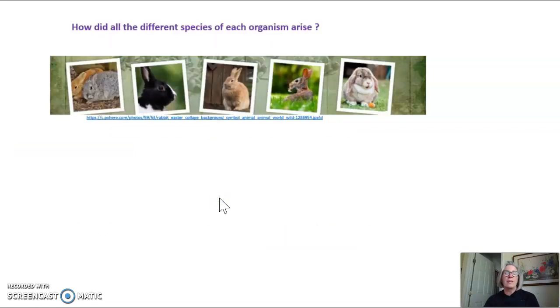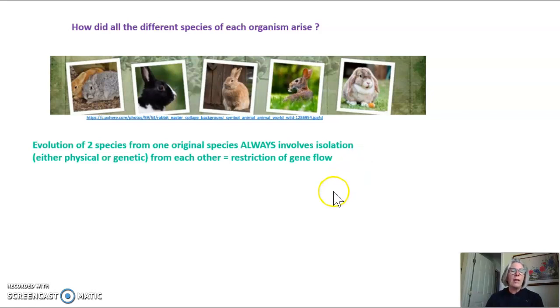Now, how did all these different species of organisms arise? If you look at all these different species here of rabbits, I love this one with the little floppy ears, how did all these different species of rabbits arise? Well, evolution of two species from one original species always involves isolation, either physical or genetic, from each other. We call this a restriction of gene flow.